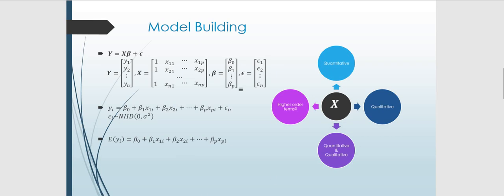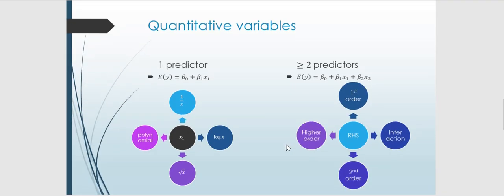There are various types of X. It can be a quantitative variable — something numerical that you can perform mathematical operations on. There are also qualitative or categorical variables. Later we will consider what happens when X consists of a mixture of quantitative and qualitative variables, and also what if we need to include higher-order terms. X here is just a symbol — you can put any kind of mathematical function in its place.